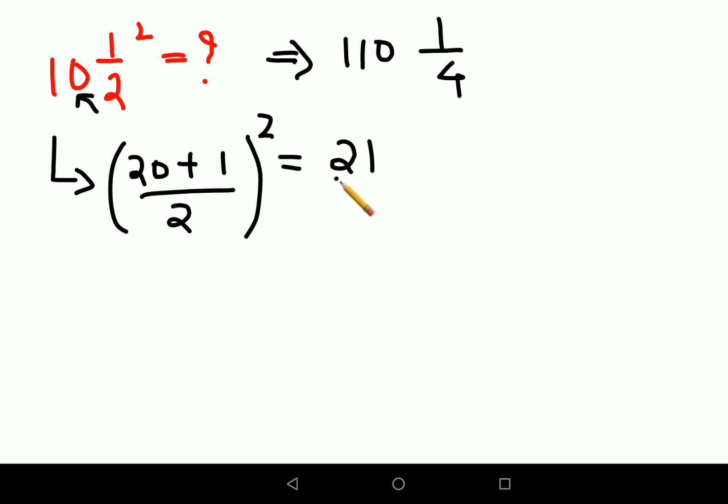So this comes out to be 21 upon 2, the whole square. Here we know 21 squared is 441. Now understand there are people who do not know this square, so then things get trickier because you have to actually first find the square of 21 and then you start the division.